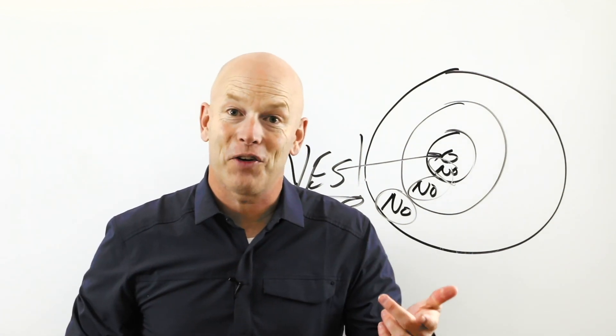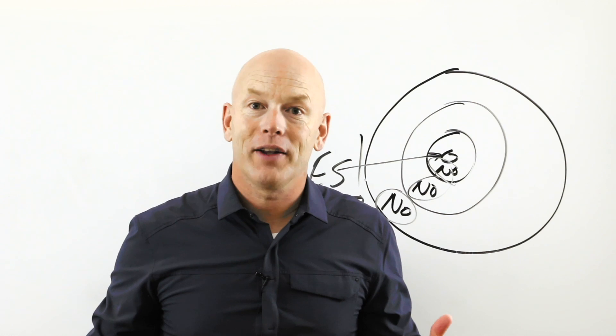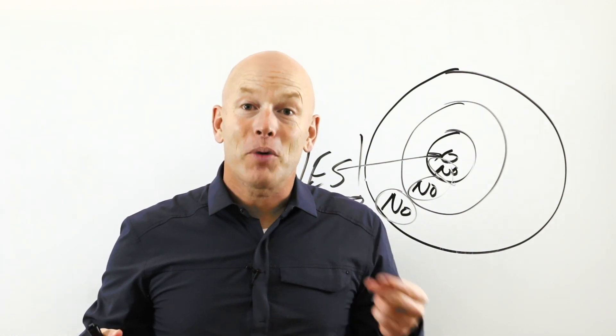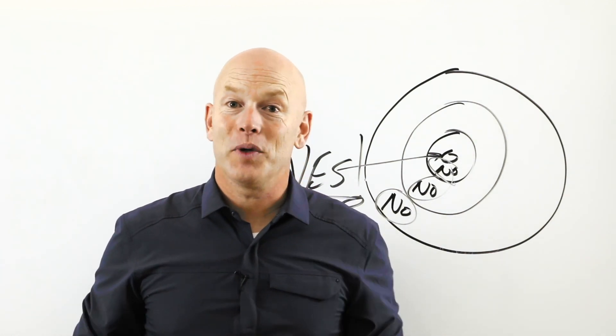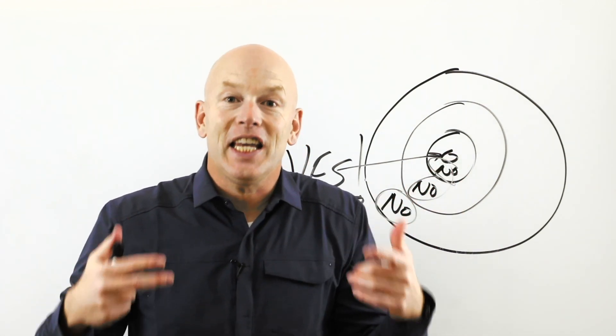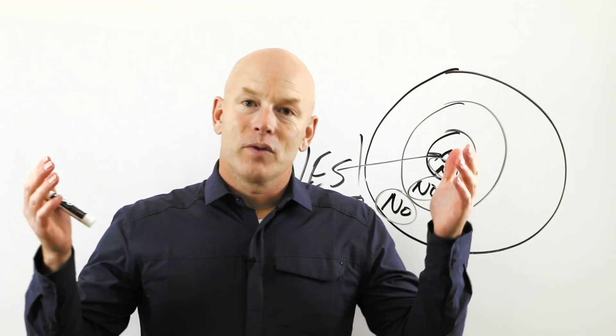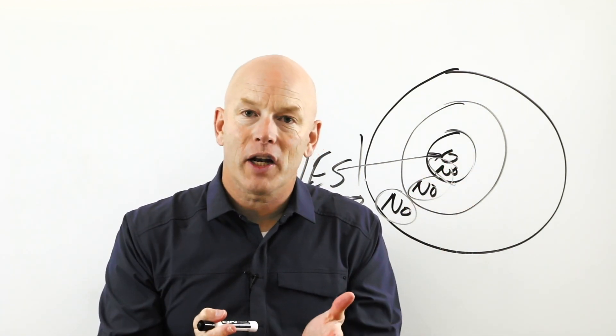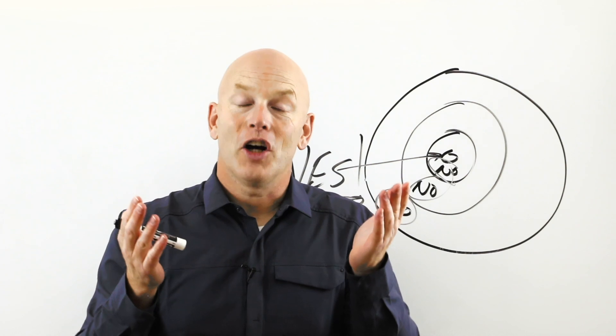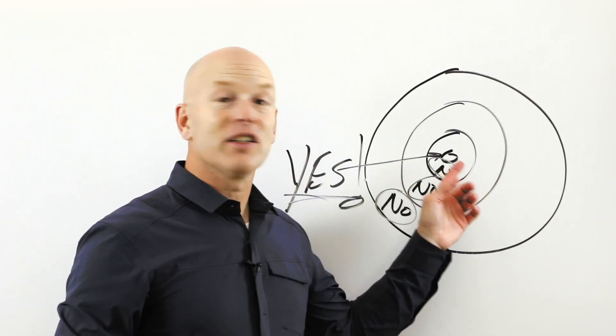Two things happen. Seth points this out. Two things happen. One, you find out there's way more of them than you thought. And number two, they talk to each other. And that, my friends, I think is the key, the secret to spreading the word. Focus on the smallest possible audience and become a real expert. The secret to spreading the word is get small.